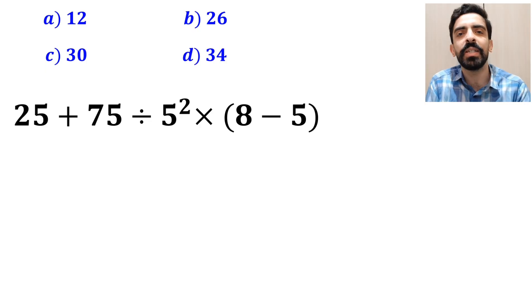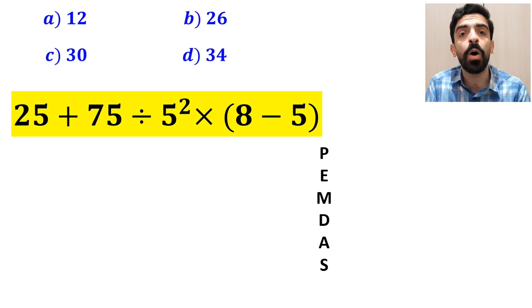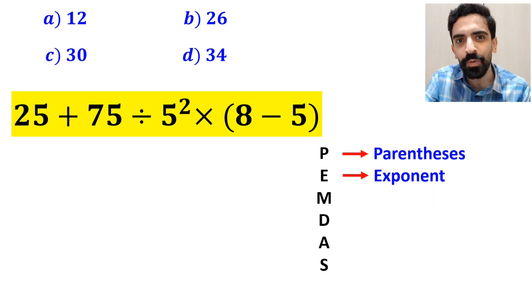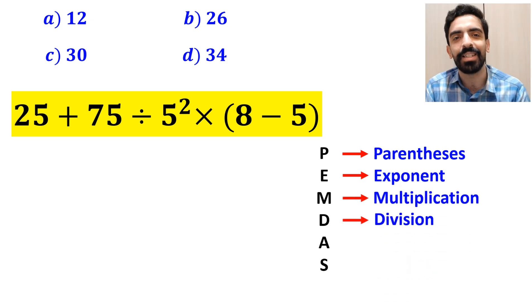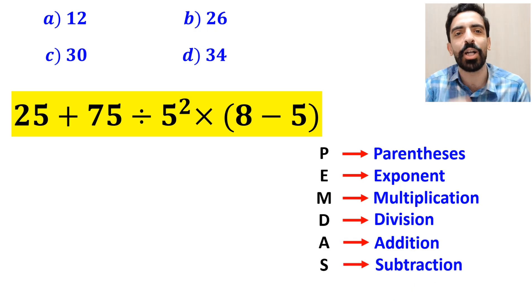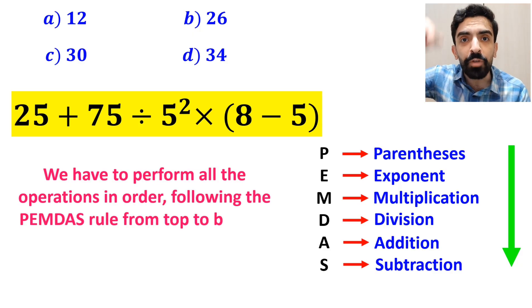Now let me walk you through how to solve this expression properly. To solve this question, we must follow a rule called PANDAS. P stands for parenthesis, E stands for exponent, M stands for multiplication, D stands for division, A stands for addition, and S stands for subtraction. It means we have to perform all the operations in order following the PANDAS rule from top to bottom.